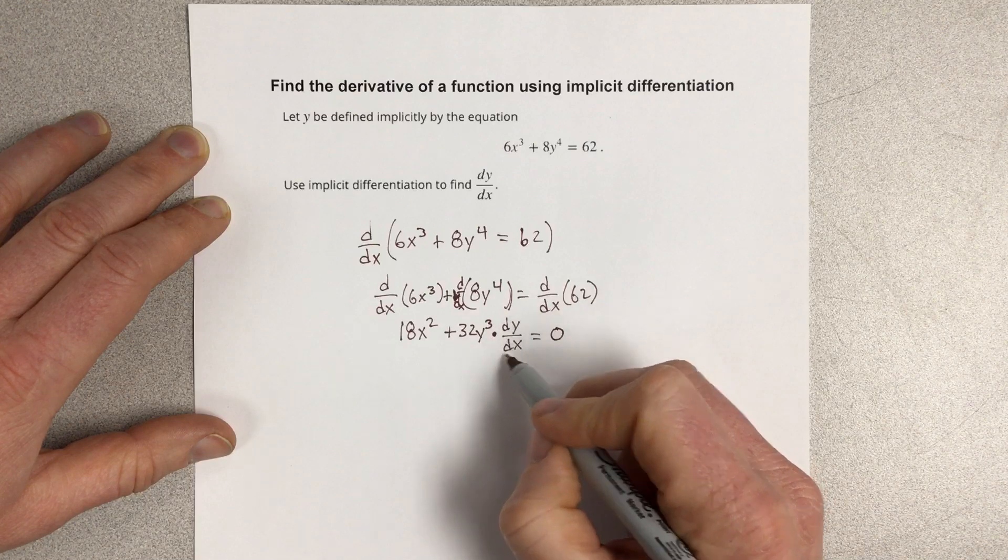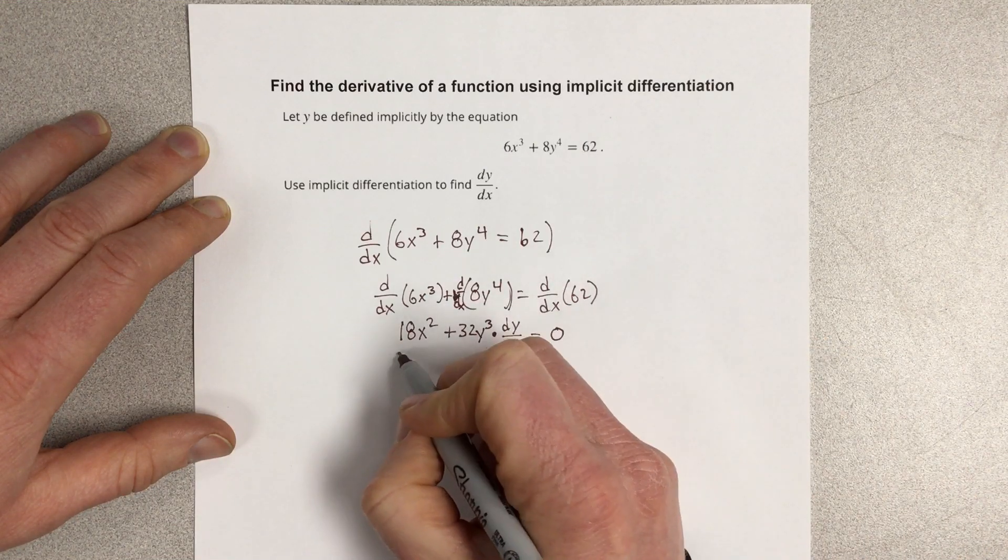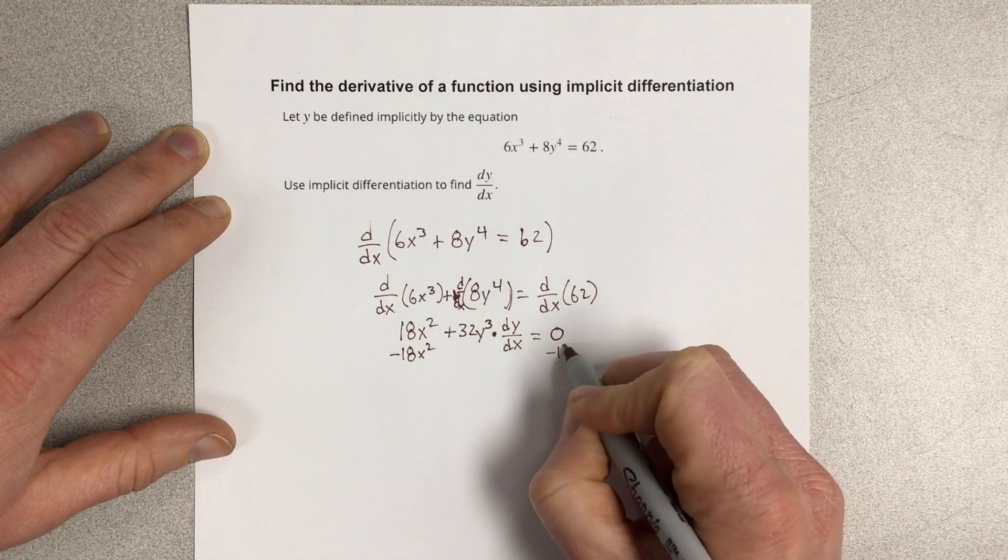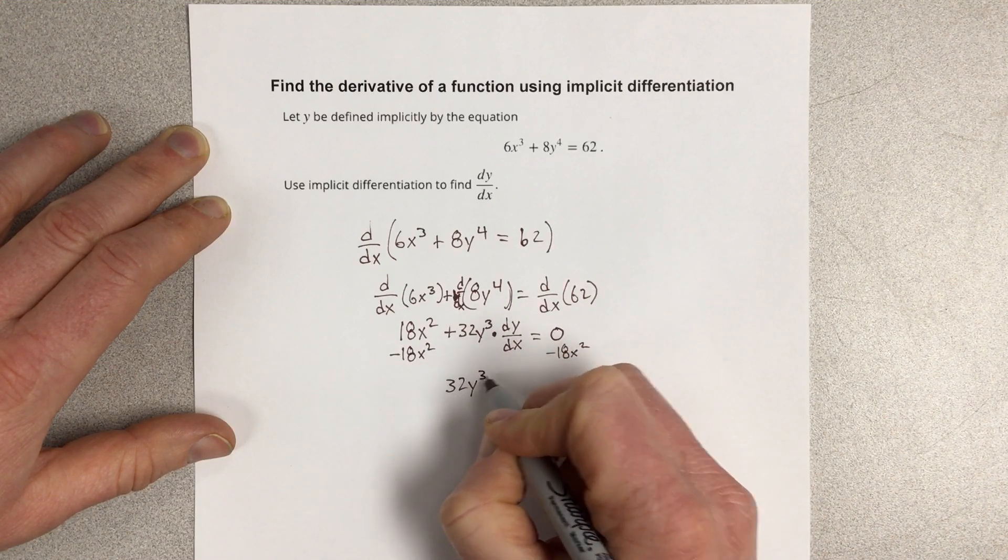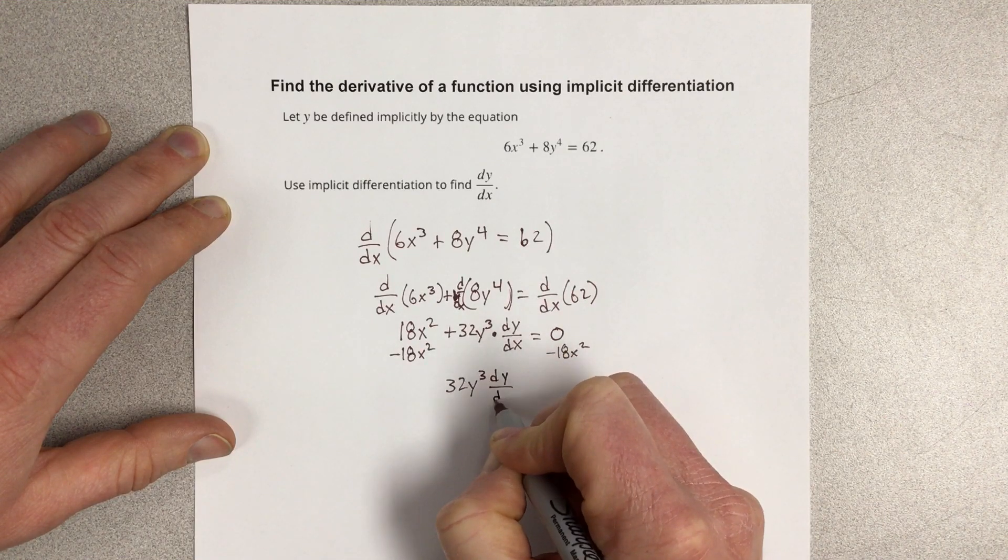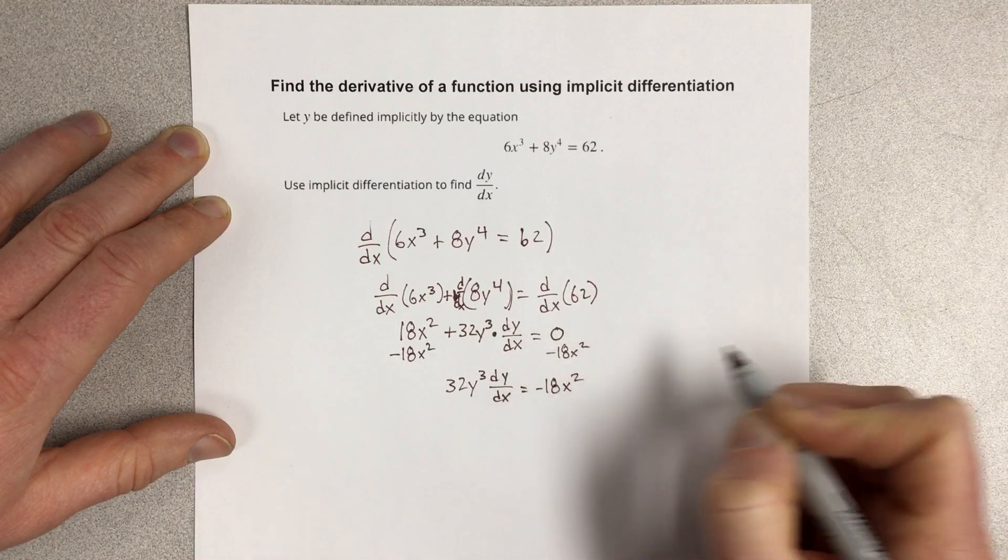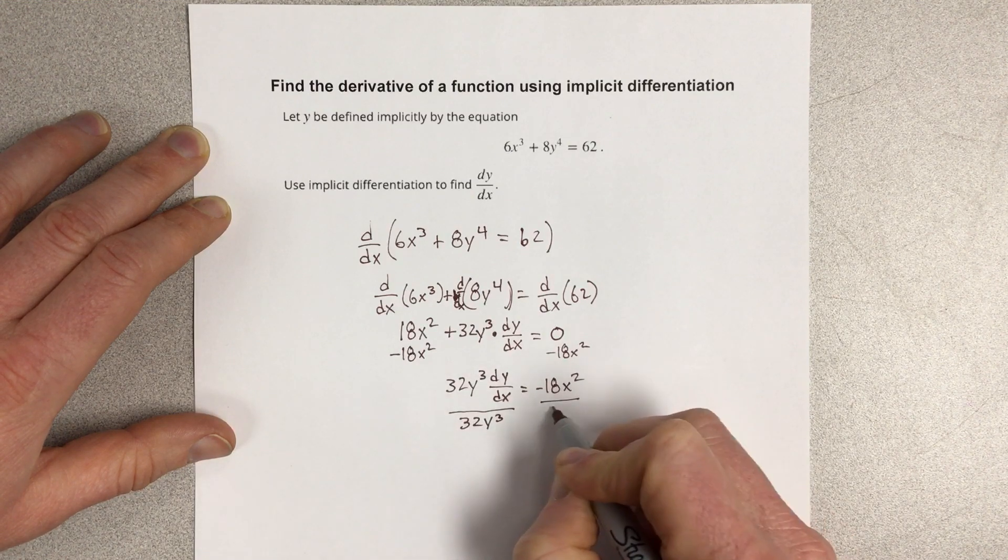Now, dy/dx is what I'm trying to solve for here. So I'm going to subtract 18x² over. And I get 32y³ dy/dx equals negative 18x². Divide by 32y³ on each side.